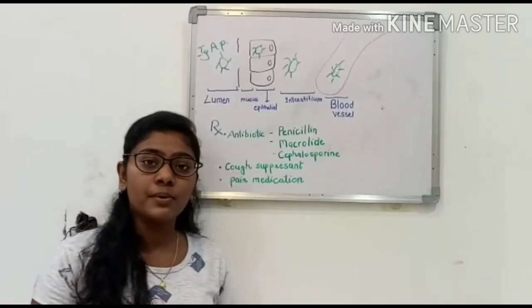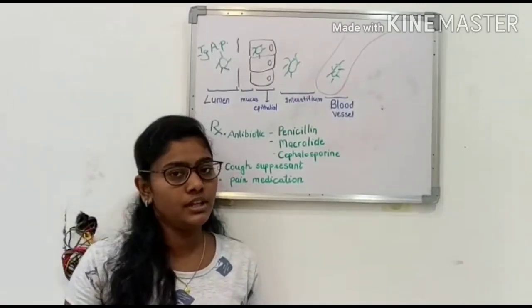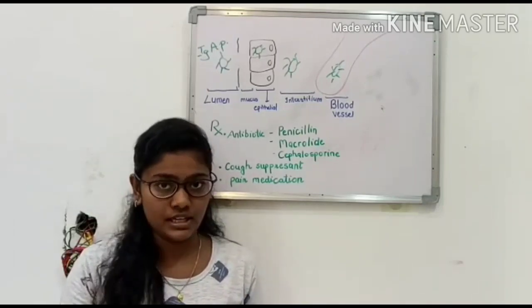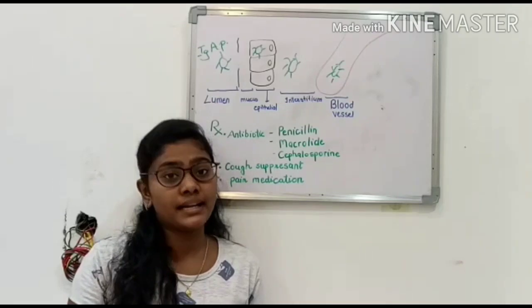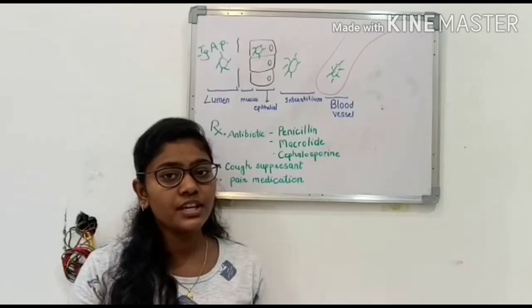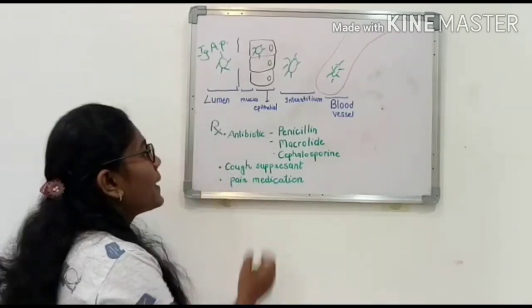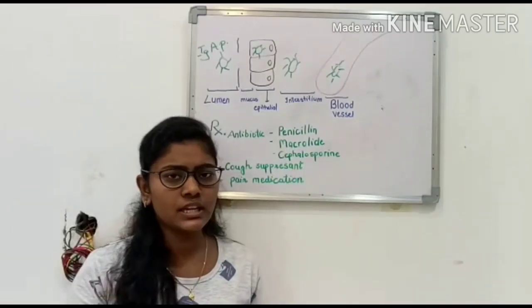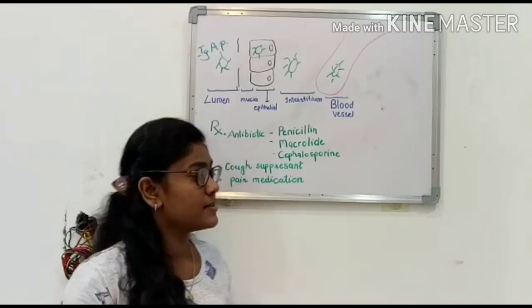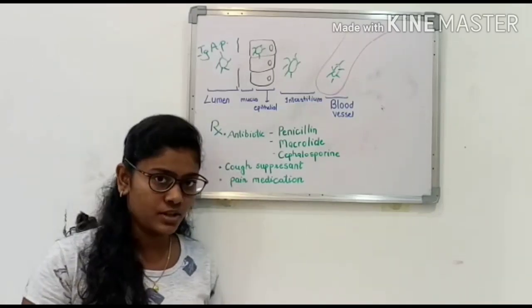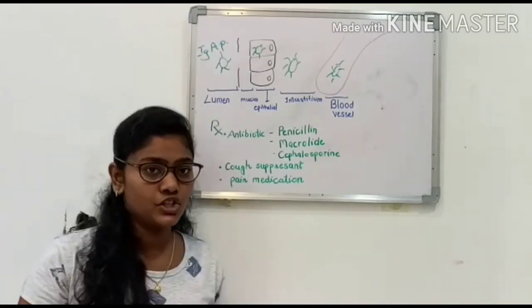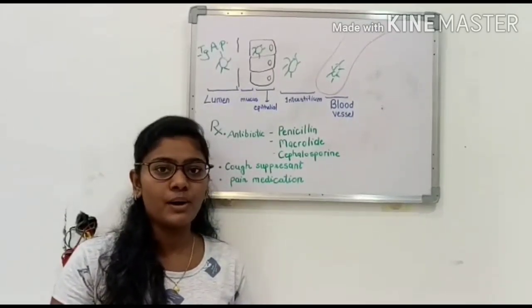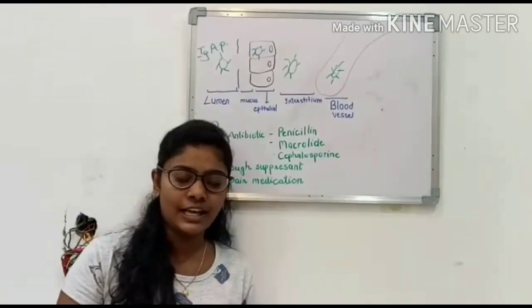Now we will look at the treatment of pneumococcal infections. Treatment depends upon the severity, but as it is a bacterial infection, we usually give antibiotics like penicillin, macrolides, or cephalosporins. Higher doses of penicillin are given in cases of meningitis. Cough suppressants and pain medications such as analgesics are also given to relieve pain. So this was all about the pneumococcal infection. Thank you.